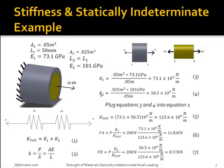I'm going to take the same problem I used the superposition method on and solve it using stiffness. Each section sees the same deflection, so the sections are in series, and the total stiffness equals k1 plus k2. I'll solve for the stiffness of each section, then the total stiffness, and derive FA and FB using a ratio — giving FA equals 11.83 kN and FB equals 8.17 kN, the same answers as before.